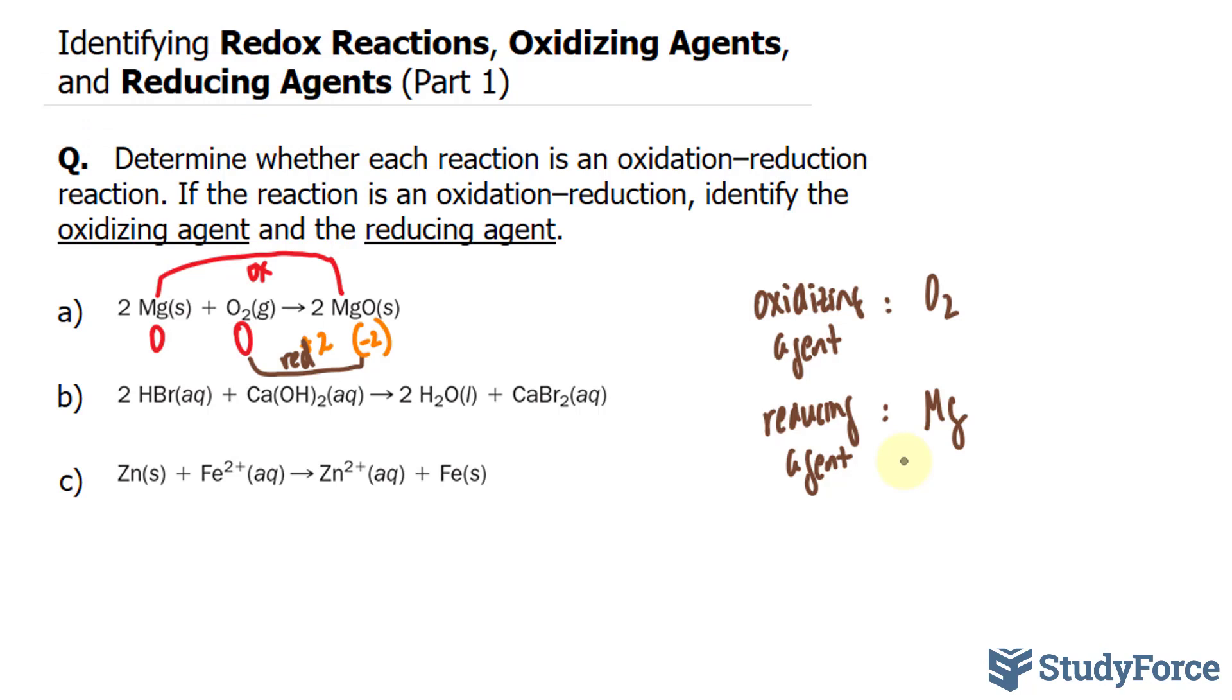Let's write out the oxidation states. Br is minus one, hydrogen is plus one. The oxygen is minus two, hydrogen is plus one. Given that this is neutral, calcium has to be plus two.